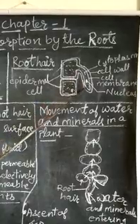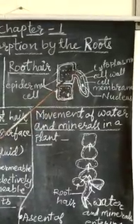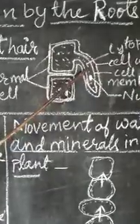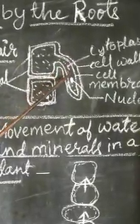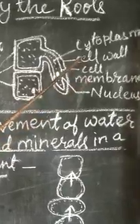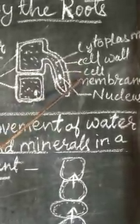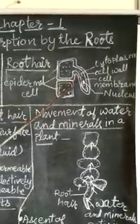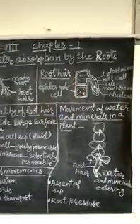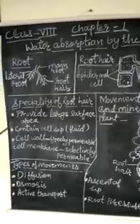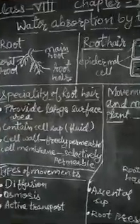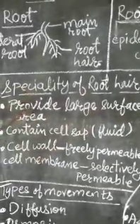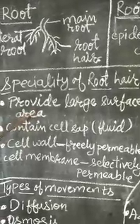This root hair has nucleus, cytoplasm, cell wall and cell membrane. As it is a part of a plant cell, these distinct structures will be present in a clear view. Now we will see the speciality of this root hair. The basic function of root hair is to provide large surface area for the maximum amount of absorption of water and minerals from soil.